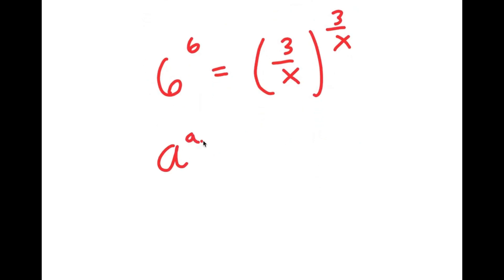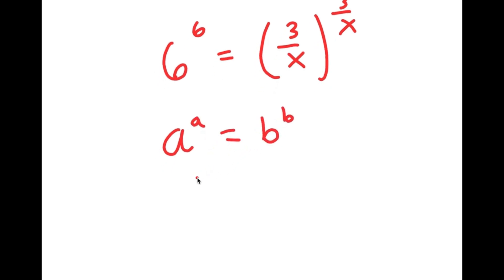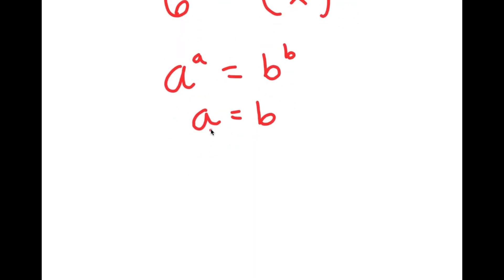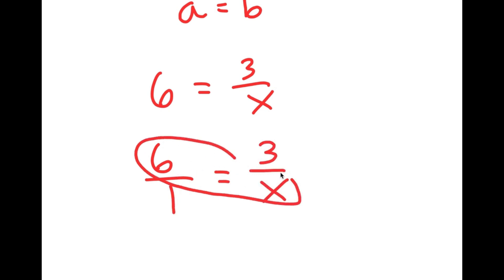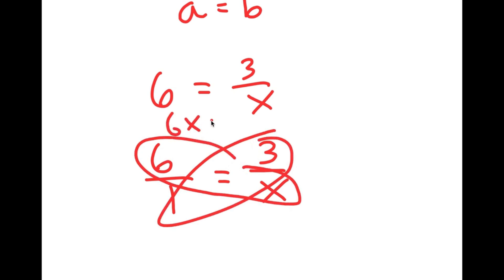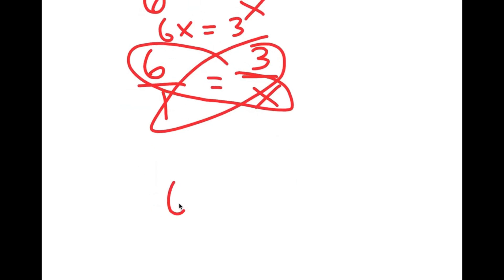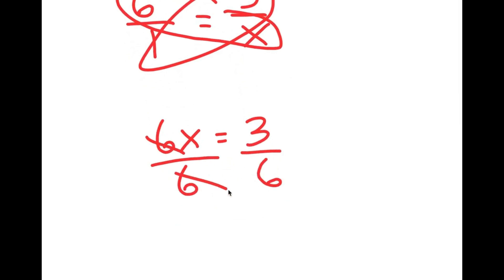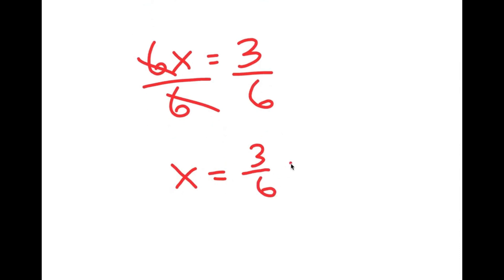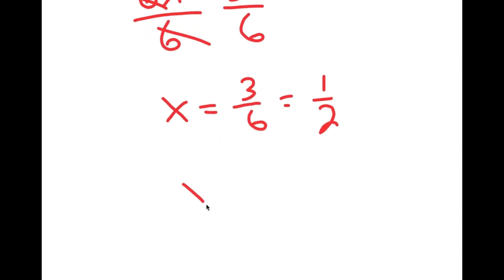Since the bases and exponents match in the form a to the power of x on both sides, we can equate them: 6 is going to equal 3 over x. I can solve this using proportions. 6 is the same thing as 6 over 1, so I get 6 over 1 is equal to 3 over x. Now I can cross multiply: 6 times x is 6x, and 1 times 3 is 3. So I get 6x equals 3. Dividing both sides by 6, I get x is equal to 3 over 6, which simplifies to 1 half.